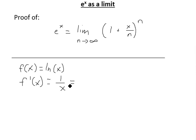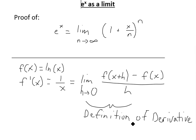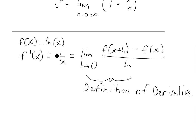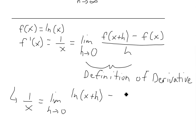If we have this, we can also write it using the definition of the derivative. So we write it as the limit as h approaches 0 of f of x plus h minus f of x, all divided by h. When we plug in ln of x for f of x, we get 1 over x equals the limit as h approaches 0 of ln of x plus h minus ln of x, all divided by h.